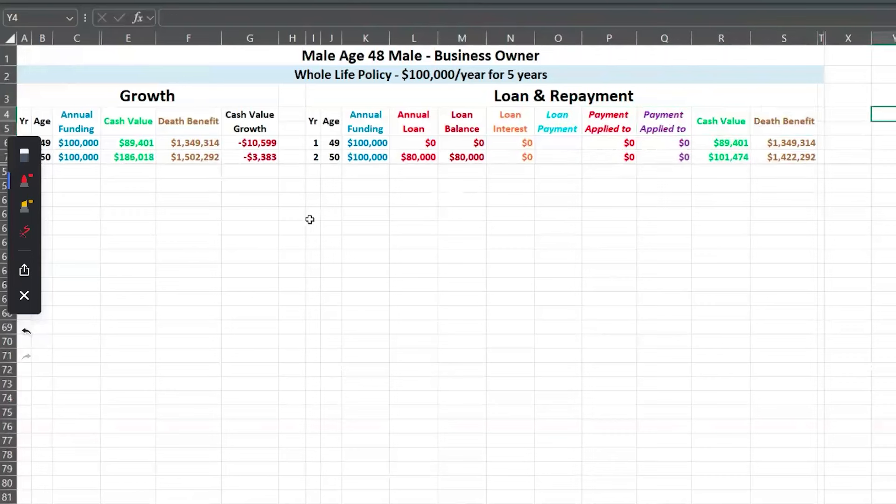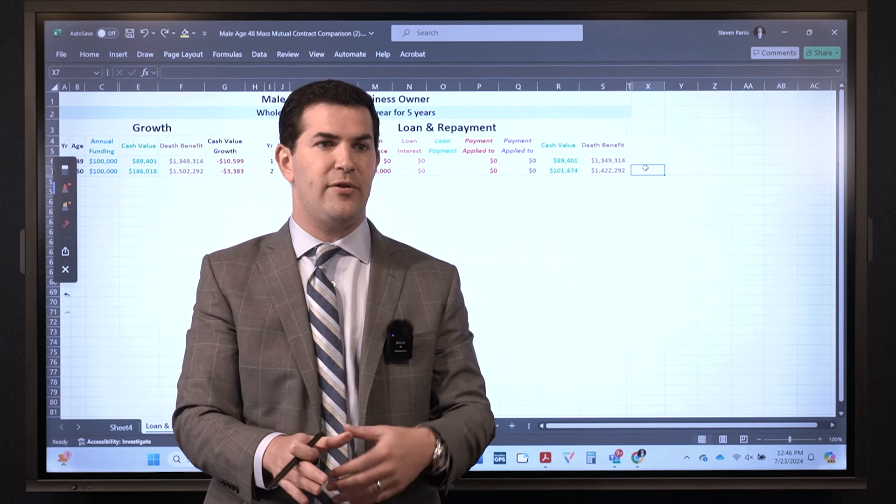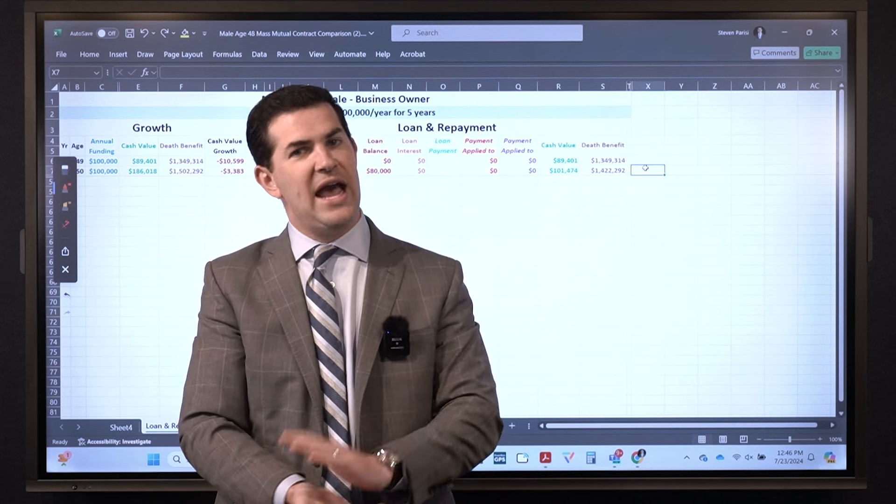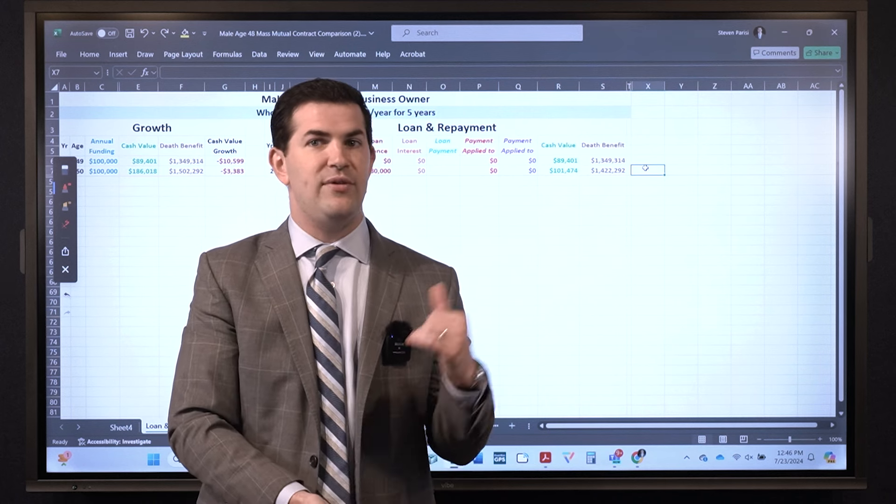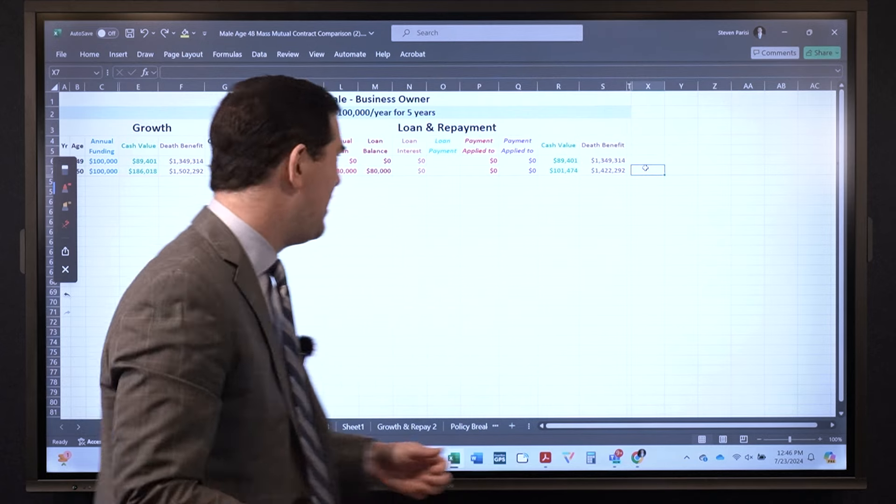So year two he's going to take an $80,000 loan. He's actually going to take it year one. You can access a policy loan typically as early as 10 business days after starting a policy. We have year two here because it's the earliest we can illustrate it in the software, that's the main reason why.